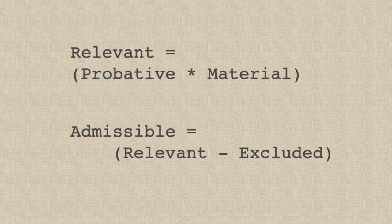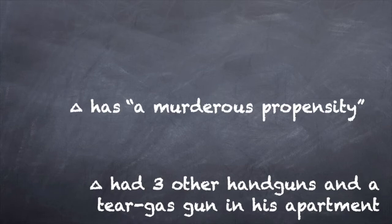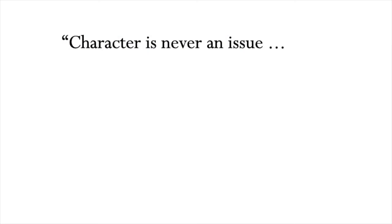The evidence in dispute in Zakowitz was that the defendant had three other handguns and a tear gas gun in his apartment. The prosecution argued on appeal that the proffered evidence was relevant to show that the defendant had a murderous propensity. The court takes this to mean that the prosecution wanted to introduce evidence about the defendant's character. Owning guns might not seem very probative of that, but suppose the prosecution had proffered a prior conviction for aggravated assault — it would not be admissible either, because character is never an issue. That is, character is not material. It is not a crime to have a bad character.